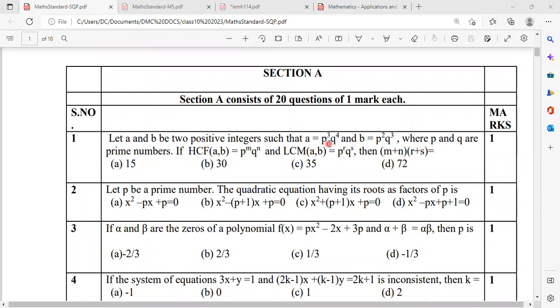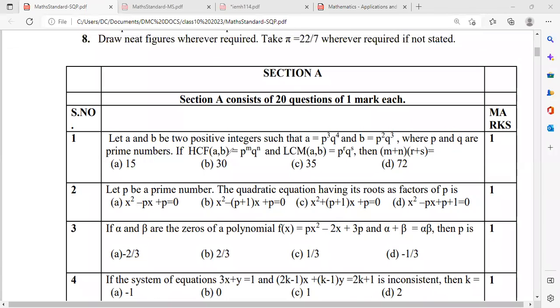Let a and b be two positive integers so that a is equal to p cube q to the power 4, and b equal to p square q cube, where p and q are prime numbers. What is the HCF of these two numbers?